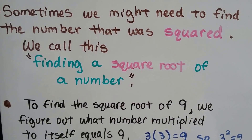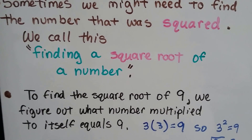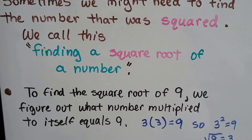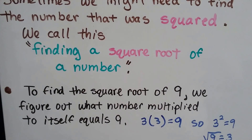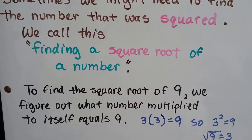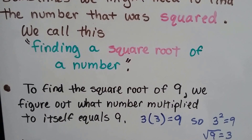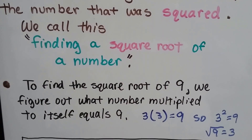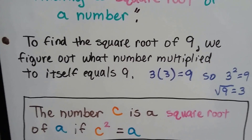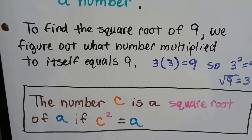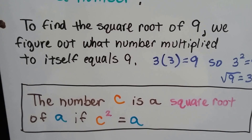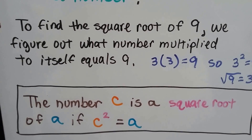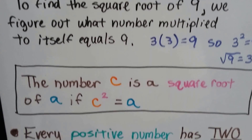To find the square root of 9, we figure out what number multiplied by itself equals 9. 3 times 3 equals 9, so the square root of 9 is 3. 3 to the second power equals 9. The formal definition is: the number c is the square root of a if c squared equals a.